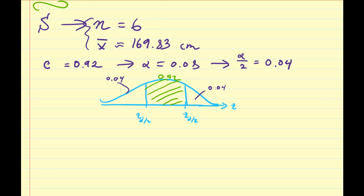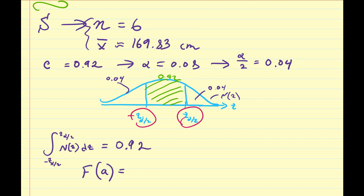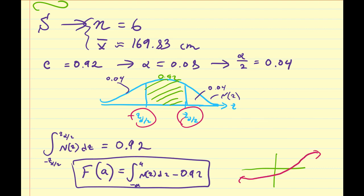So we need to find out what these critical values, z alpha over 2, are equal to. We know that since this is a normal distribution, that the integral from minus z alpha over 2 to z alpha over 2 under the standard normal distribution with respect to z must be equal to 0.92. So we can define some function f of a, and this is going to be equal to the integral from minus a to a of n of z dz minus 0.92. Once you take this function and plug it into Desmos, that's going to give you some graph similar to this distribution. And this value a is going to correspond to this critical value, z sub alpha over 2. And you should find that number to be equal to 1.751. So that is the critical value associated to this particular confidence level C.